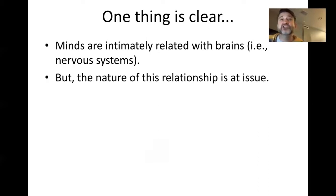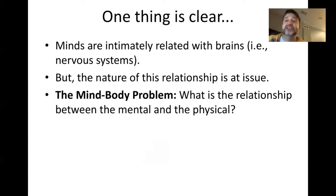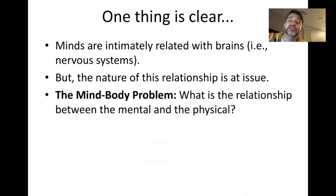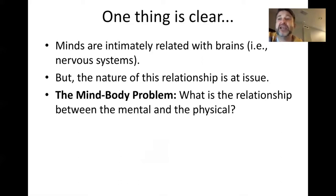The nature of this relationship is an issue — we don't have a good idea of how it is that a brain can give rise to a mind. So the question today relates to this. The question is what's called in philosophy the mind-body problem. The mind-body problem asks: what is the relationship between the mental and the physical? This lecture is a very brief reduction of some of the main positions on the mind-body problem. If you're interested, we cover it in more detail in my philosophy of mind class.